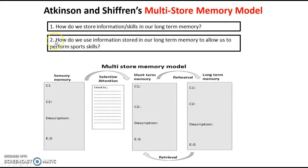We're also going to look at the process of how this model allows us to use the information, or motor programs as we'd call it later, stored in our long-term memory — how we retrieve that to be able to actually perform a skill. For example, when you're catching a ball in whatever sport — basketball, cricket, rugby, rounders, netball — we're going to look at how this model, in almost a split second, allows us to go from seeing something to chunking and comparing it, then retrieving it to perform it. You're using your memory every time you perform a sports skill.